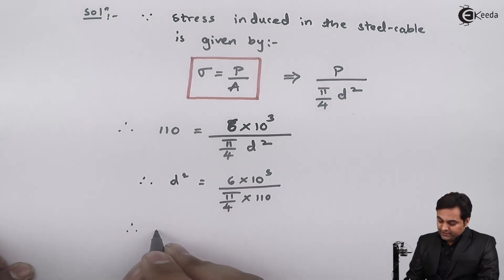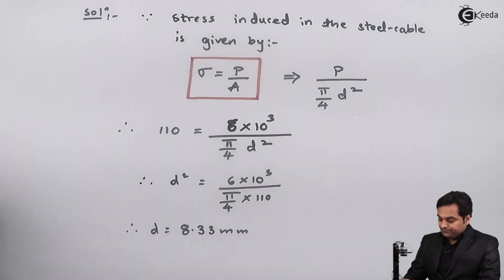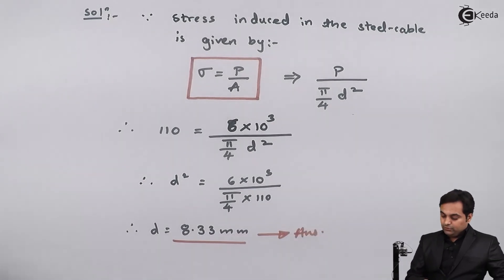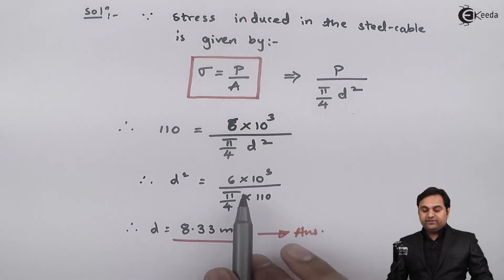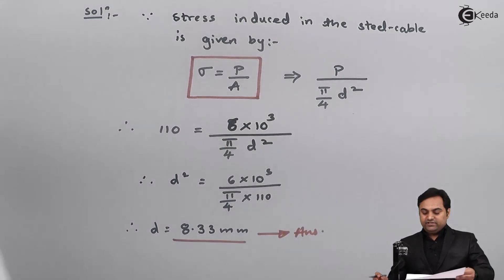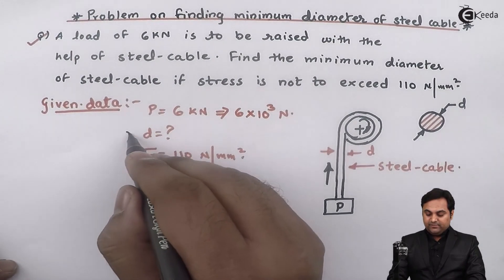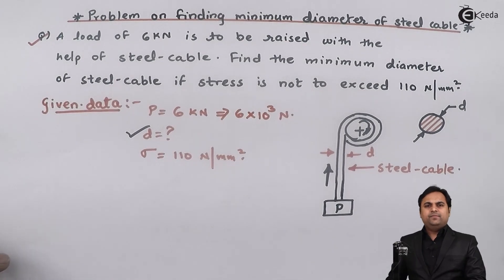So therefore d comes out to be 8.33 millimeters. So this much should be the diameter of the steel cable, then only it is going to lift a load of 6 kilonewtons. And here if we see in this problem, they were telling us to calculate the diameter of the steel cable, and here we have found out the diameter as 8.33 millimeters. And with this we complete the problem.